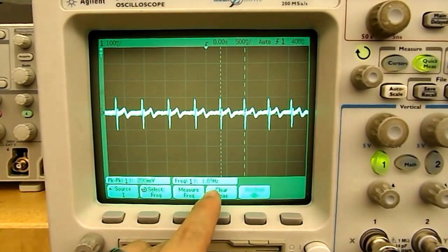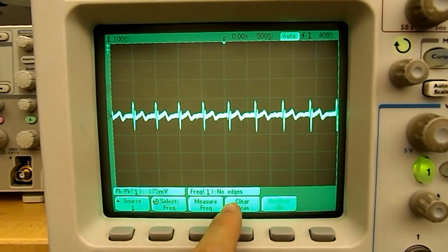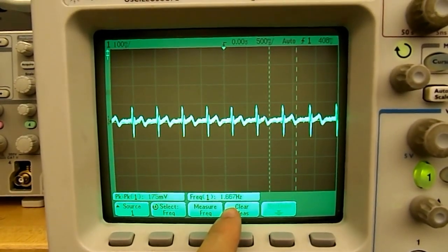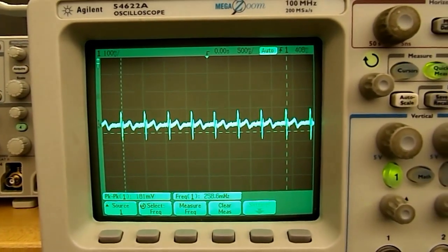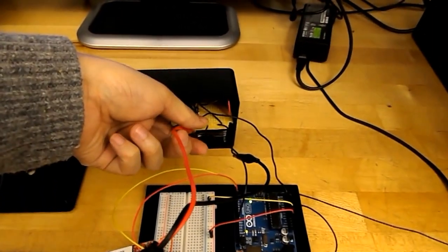This is the frequency right here. If you can zoom in, it's about 1.6 Hz. 1 Hz is 60 beats per minute. Right now if I disconnect the oscilloscope there should be no signal.